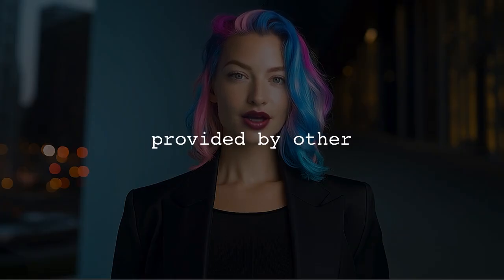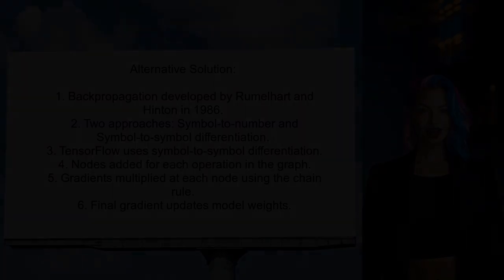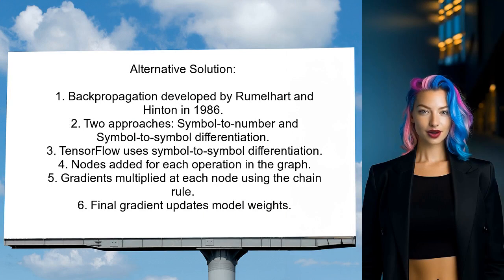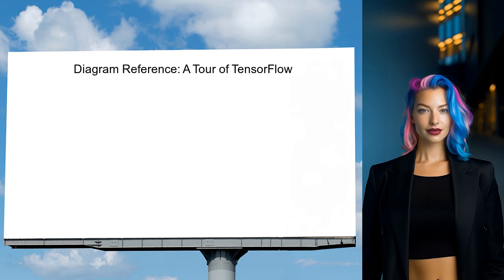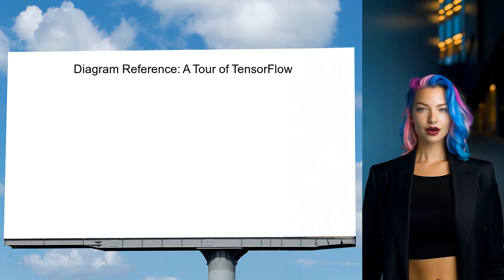Let's look at the answers provided by other users. One user explains that backpropagation in TensorFlow is based on a method developed by Rumelhart and Hinton in 1986. They highlight two approaches for calculating gradients through computational graphs. The relevant approach for TensorFlow is symbol-to-symbol differentiation. In this method, TensorFlow adds nodes for each operation in the graph, allowing it to compute gradients using the chain rule. During backpropagation, the gradients are multiplied at each node to derive the overall gradient, which is then used to update the model's weights.